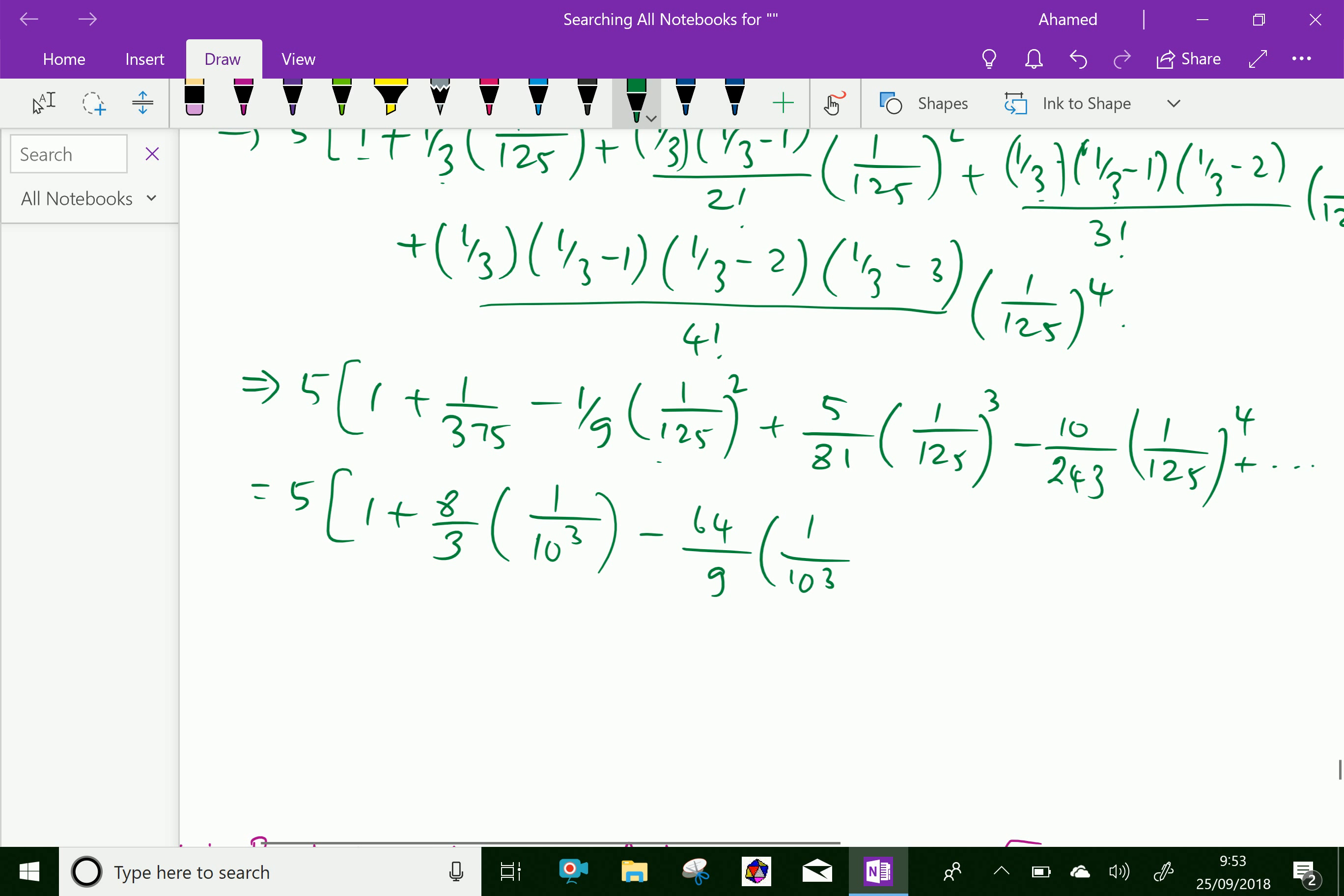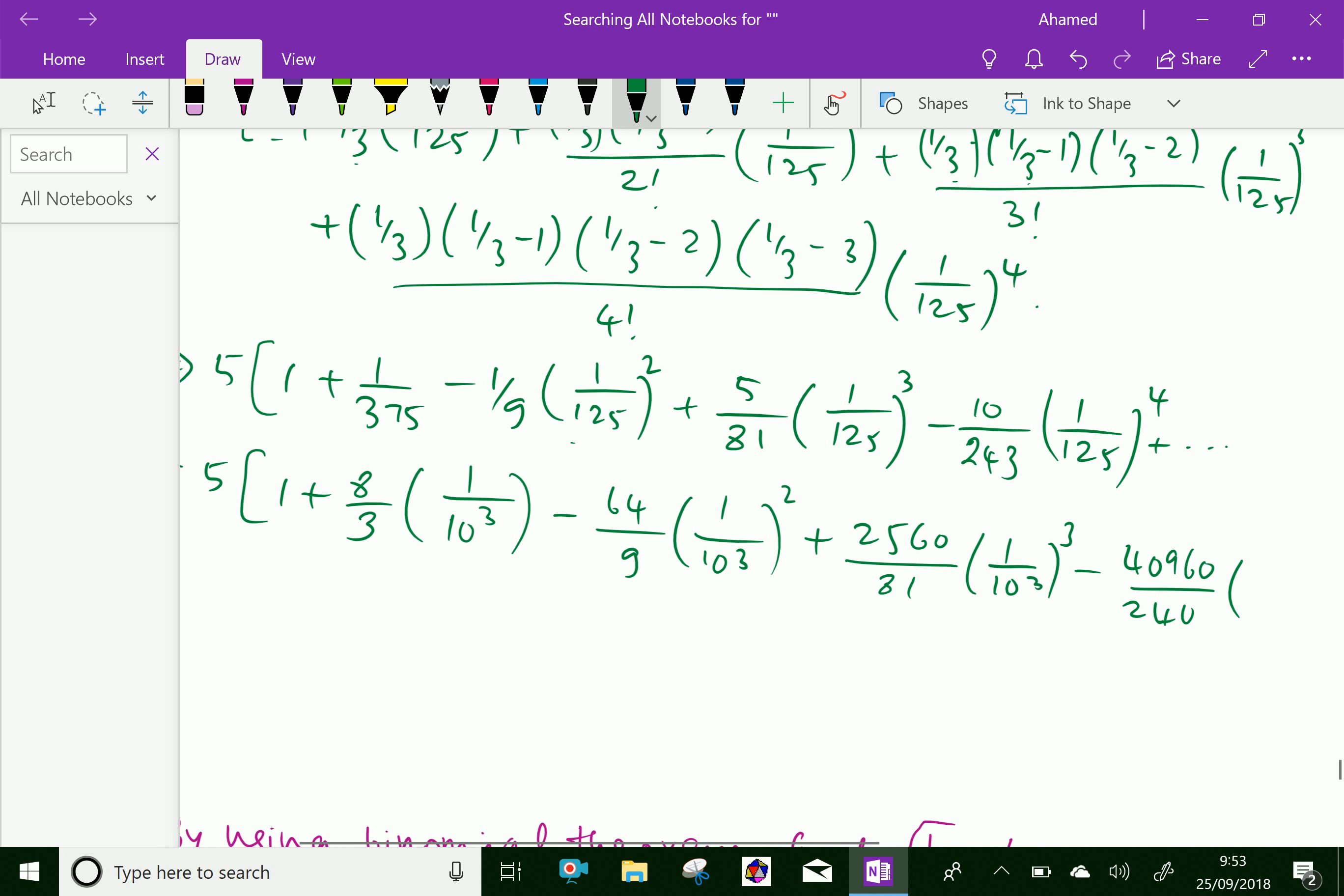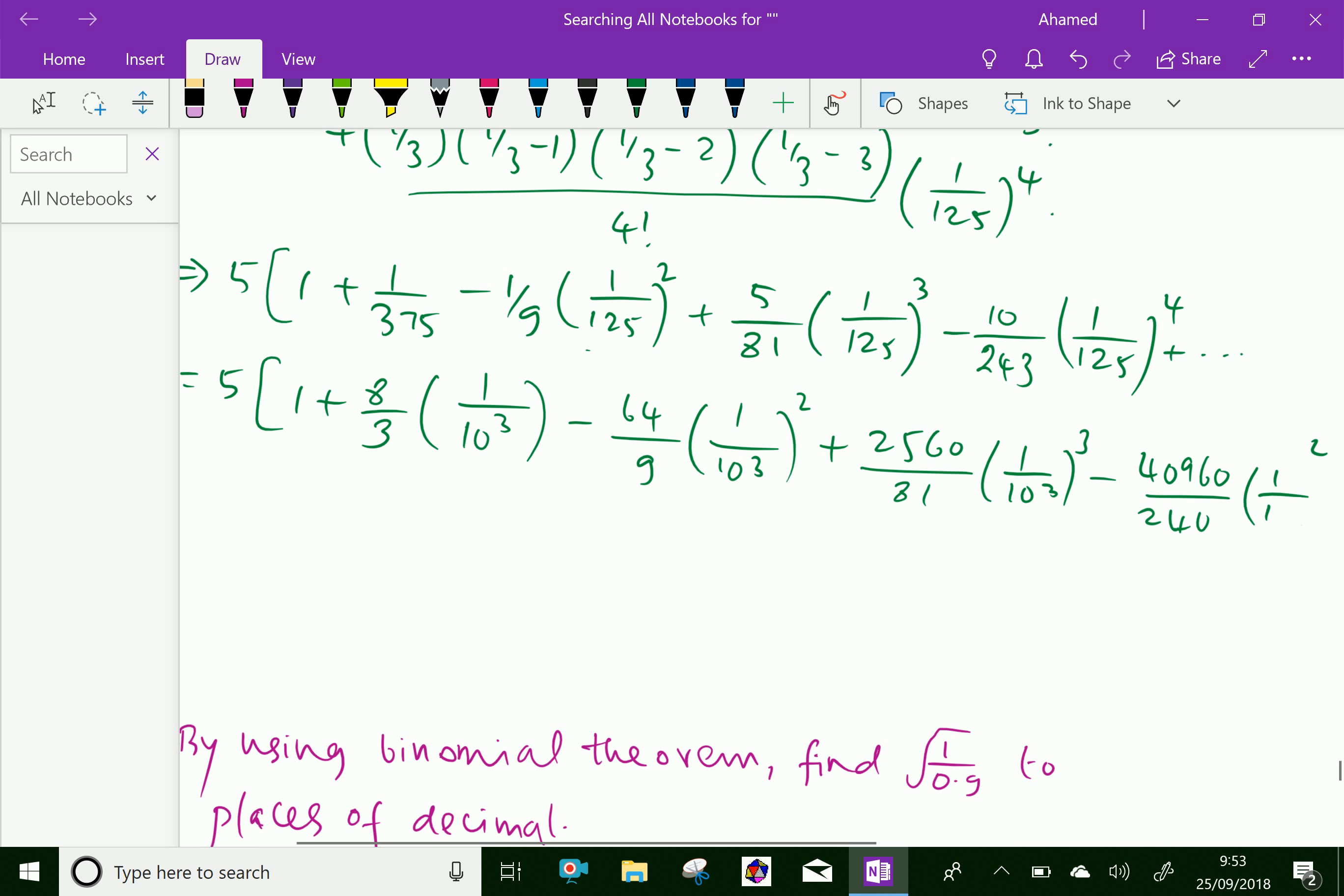Minus this simplification of 1/9 times 1/125 squared is 64/9 times 1/10^3 plus 5/81 times 1/125 cubed is 2560/81 times 1/10^3 minus the last simplification 10/243 times 1/125^4 is 40960/243 times 1/10^4.